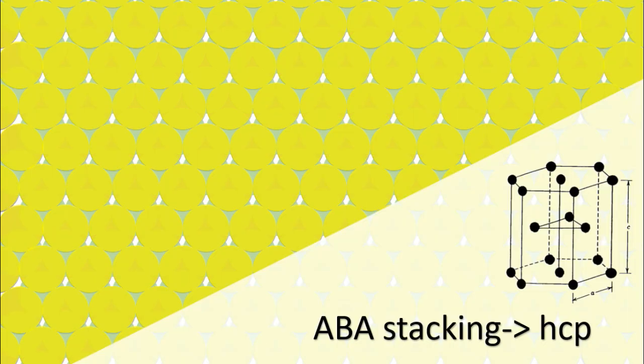Now it comes to the third layer, and things get interesting. There are two ways to do this. The first way is to put the atoms right on top of the first layer atoms. This is the so-called ABA stacking, and the resulting crystal structure is HCP structure.